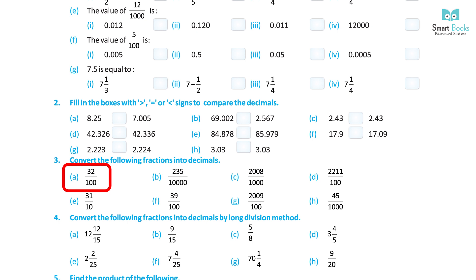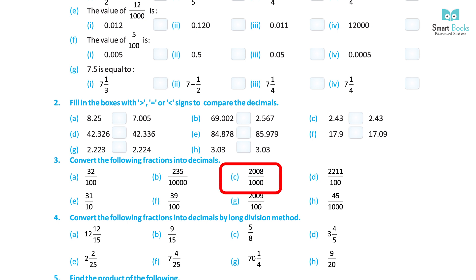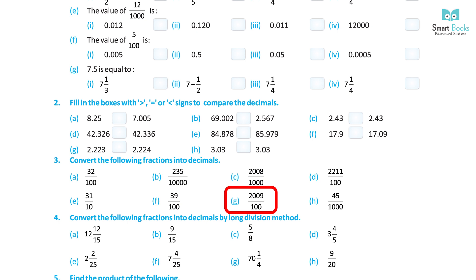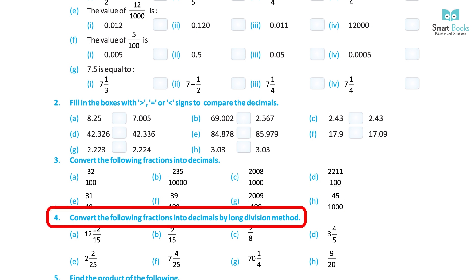Question 3: Convert the following fractions into decimals. A. 32 upon 100 — Solution: 0.32. B. 235 upon 10,000 — Solution: 0.0235. C. 2,008 upon 1000 — Solution: 2.008. D. 2211 upon 100 — Solution: 22.11. E. 31 upon 10 — Solution: 3.1. F. 39 upon 100 — Solution: 0.39. G. 2,009 upon 100 — Solution: 20.09. H. 45 upon 1000 — Solution: 0.045.